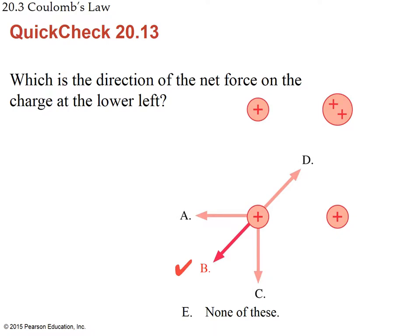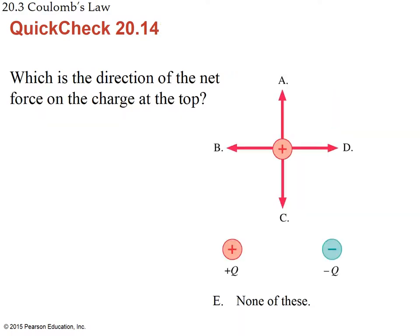The answer is that the two simpler forces (down and to the left) add with the diagonal force, and everything combines to give a resultant pointing at 45 degrees — down and to the left. Think of ropes pulling in those two directions: the object moves diagonally at 45 degrees rather than straight down or straight left.